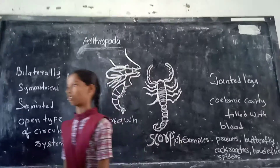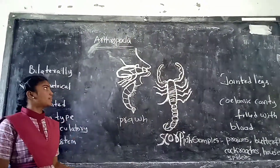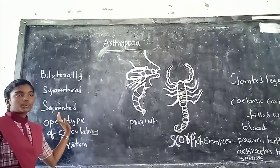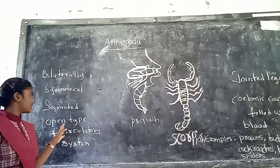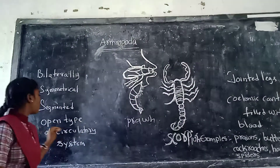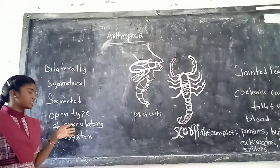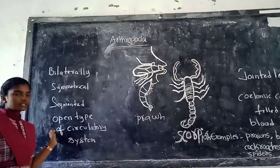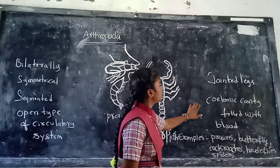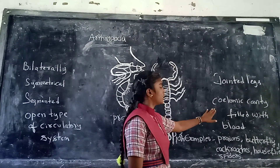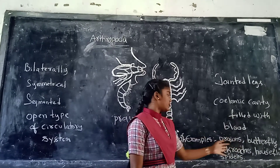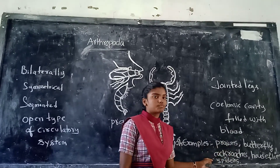I am explaining again. Today's topic is Arthropoda. Bilaterally symmetrical means two equal halves are the same design. These are segmented. Blood is pushed into the spaces — open type of circulatory system. They have jointed legs. Haemocoel cavity filled with blood. Examples: Prawn, Butterfly, Cockroach, Housefly, Spider.